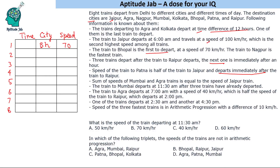The train to Mumbai departs at 11:30 after three trains have already departed, which means the Mumbai train is the fourth train and departs at 11:30.